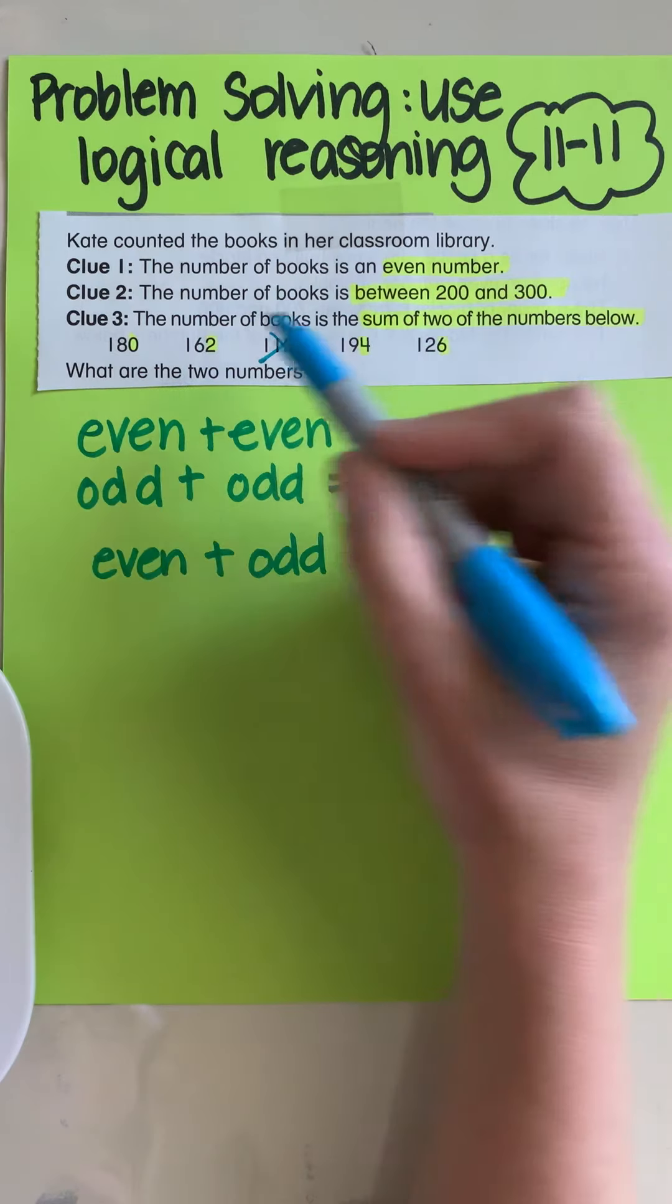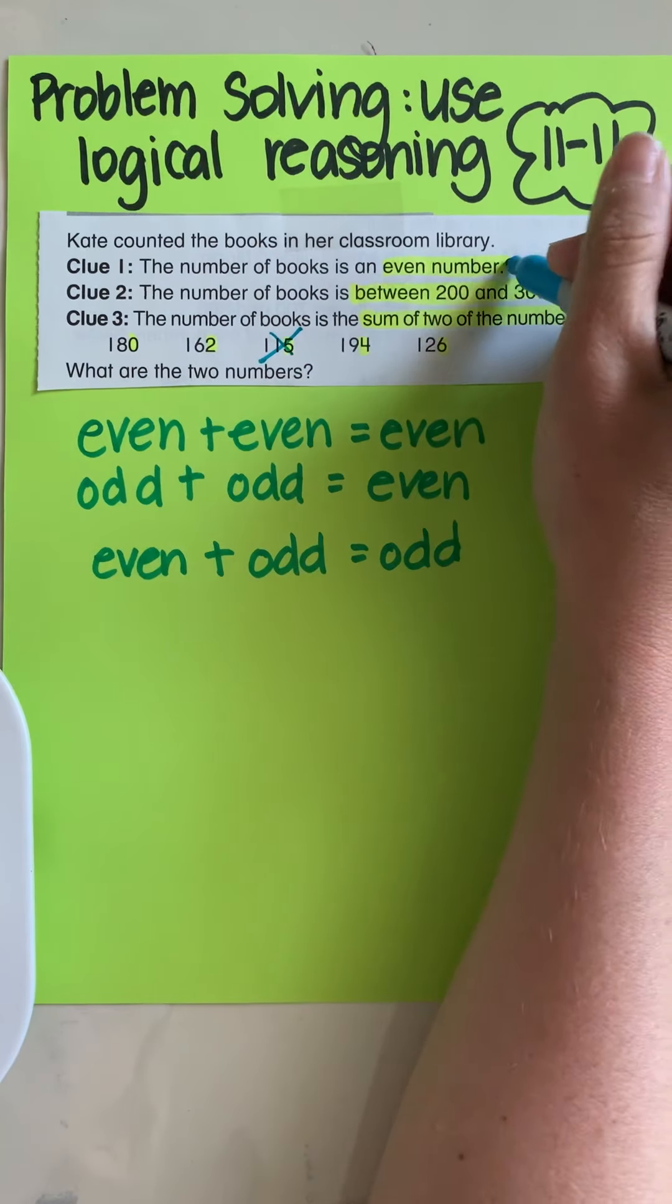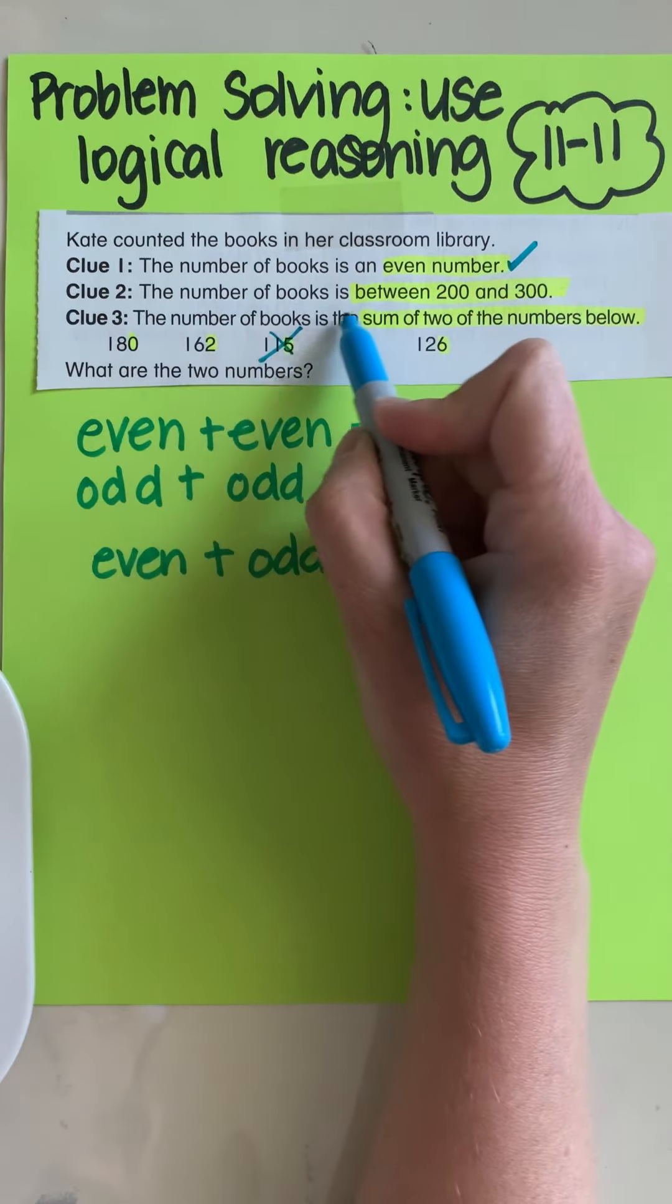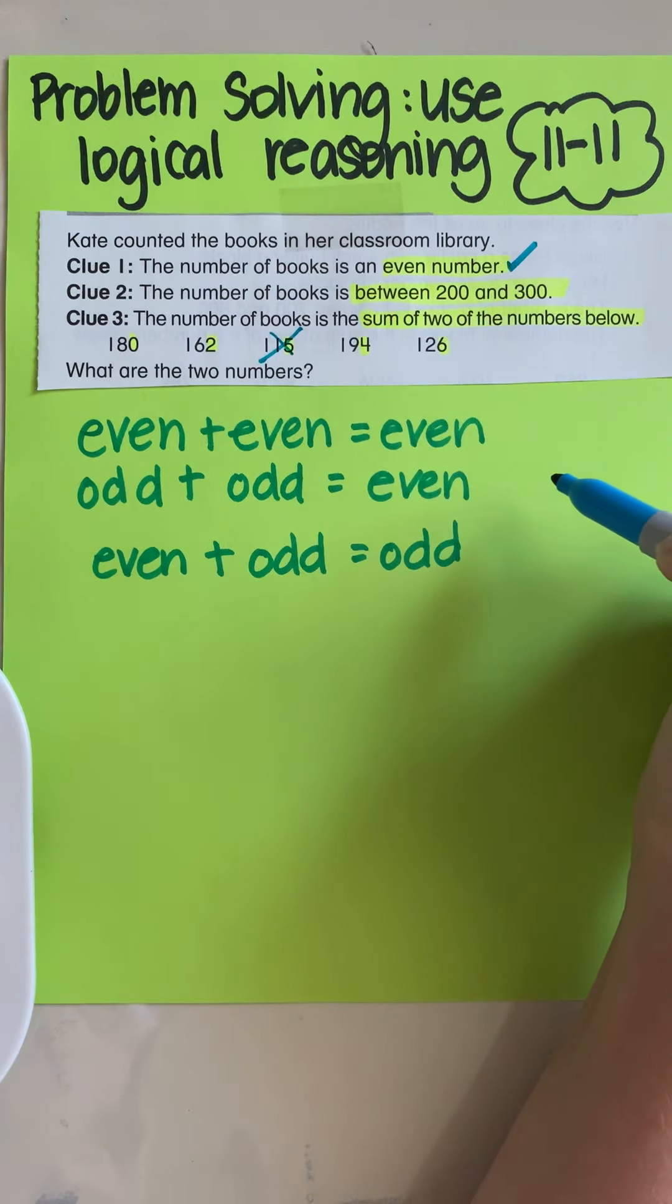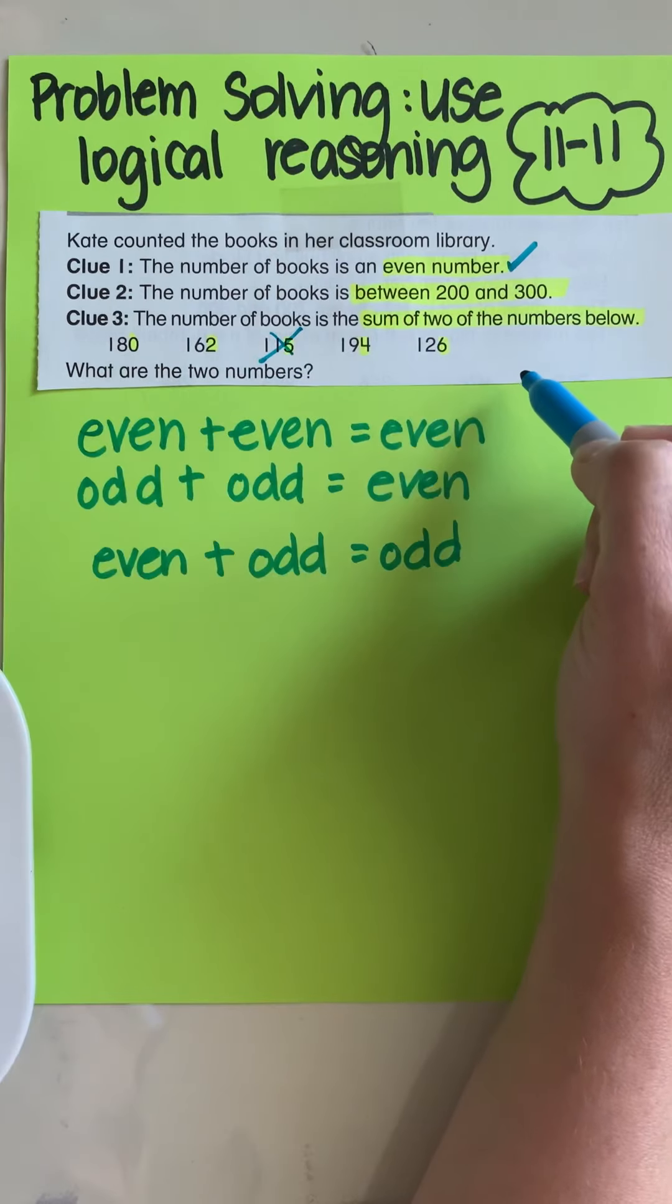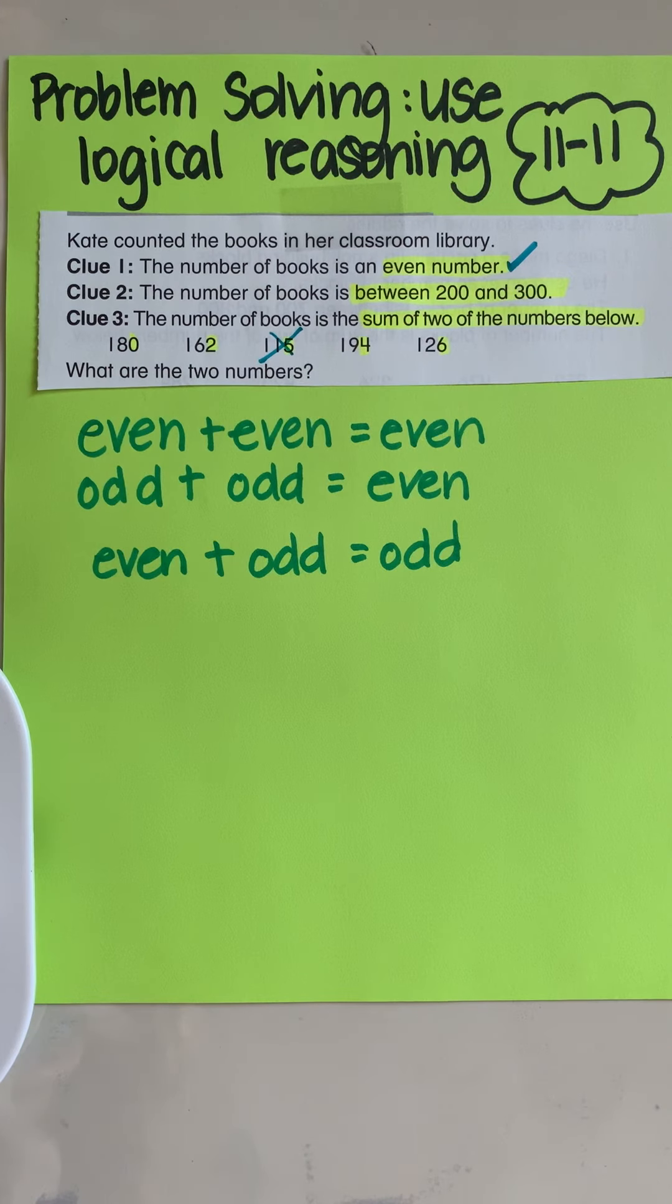So now I'm going to move on to my next clue. The number of books is between 200 and 300. So that means the sum of two of these numbers has to be between 200 and 300. So what I need to do is I actually have to add all of these numbers to find their sums.